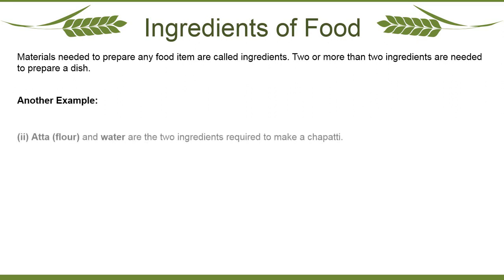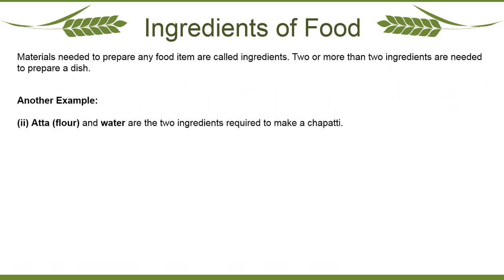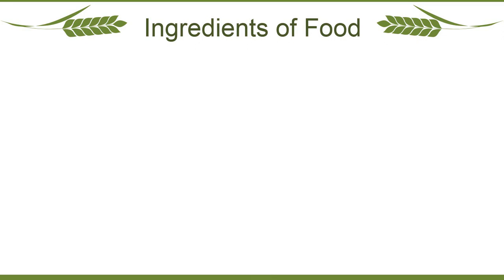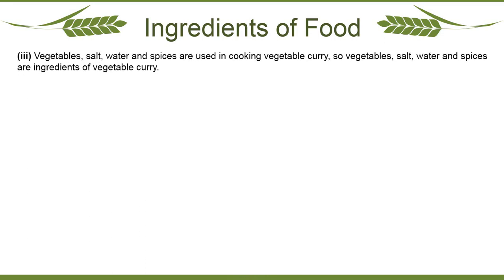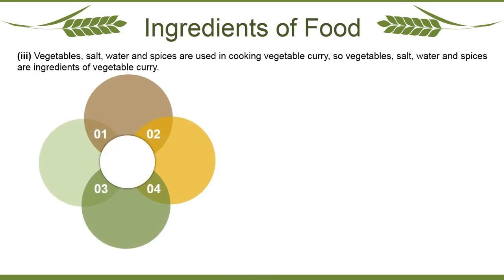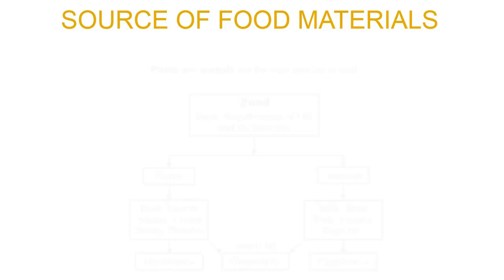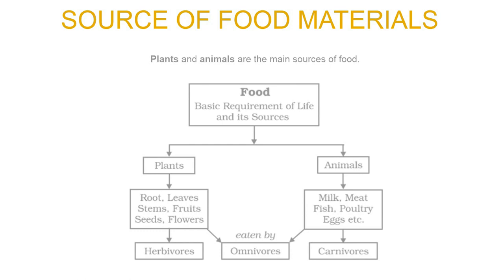Another example: atta or flour and water are the two ingredients required to make a chapati. Another example: vegetables, salt, water and spices are used in cooking vegetable curry, so they are the ingredients of vegetable curry. Now the next question is: from where do we get these food materials? What are the sources of food?